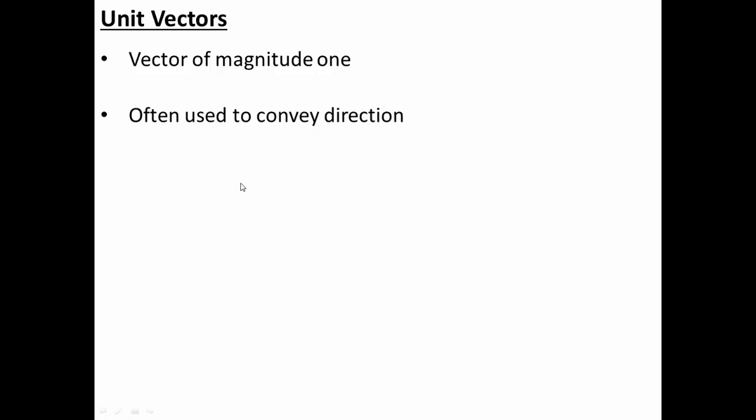Now the reason we would use a unit vector is to convey direction. Often it can be useful, you know, if I wanted to convey magnitude, I can just use a scalar. But if I wanted to convey direction, a vector is going to give me both magnitude and direction. So if we make it a unit vector, we're simply leveling the playing field as far as magnitude goes. So that means direction is the only thing that's really significant about it. So that's why we use unit vectors.